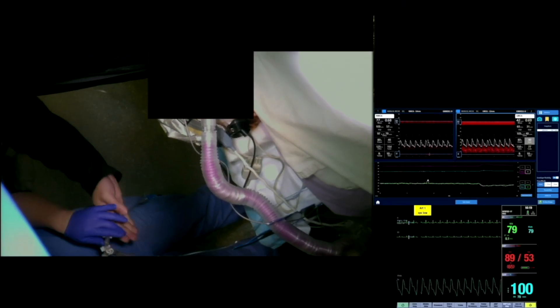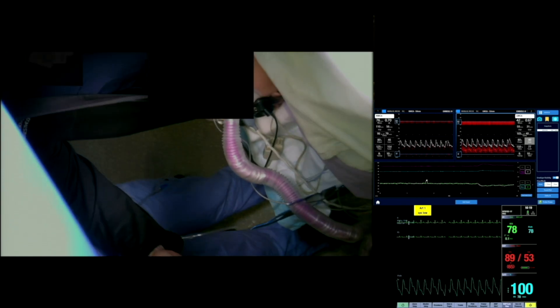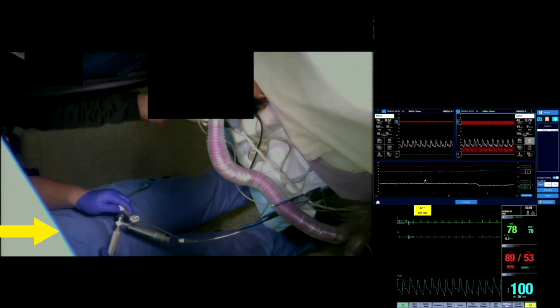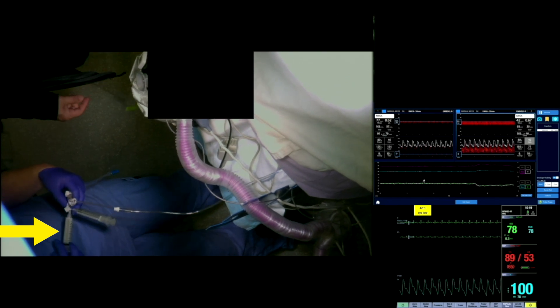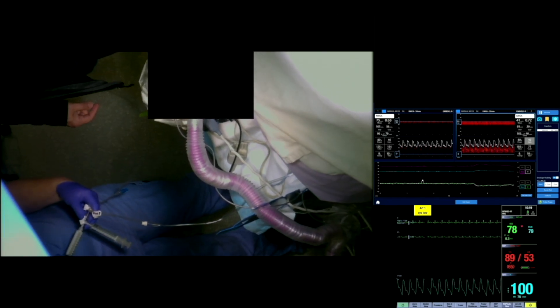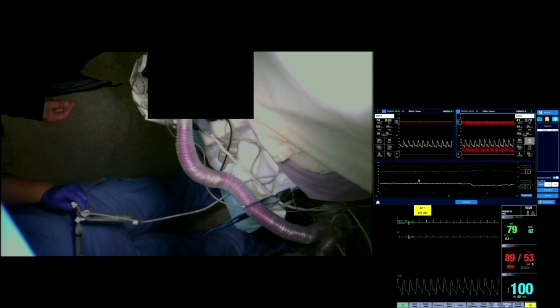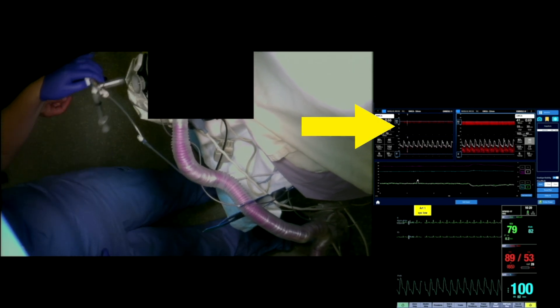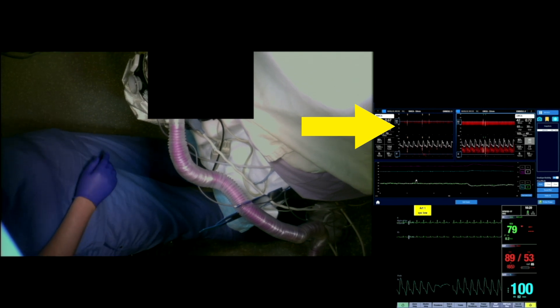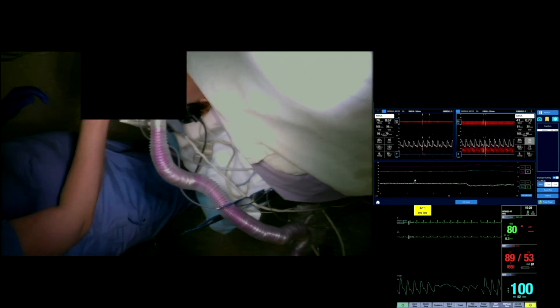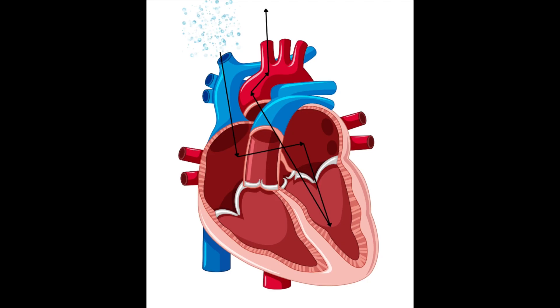The middle cerebral arteries were insonated bilaterally according to standard TCD protocol. Intravenous agitated saline administration was carried out to examine whether or not the patient had a patent foramen ovale or other forms of a right-to-left shunt. We can appreciate a few hits on TCD bilaterally, which are the small bubbles generated during the saline agitation that reached the MCAs. Since the hits occurred within about 8 to 10 cardiac cycles after the agitated saline administration, we can state with high confidence that the shunting route is through a patent foramen ovale, as opposed to a more distal AV shunt.